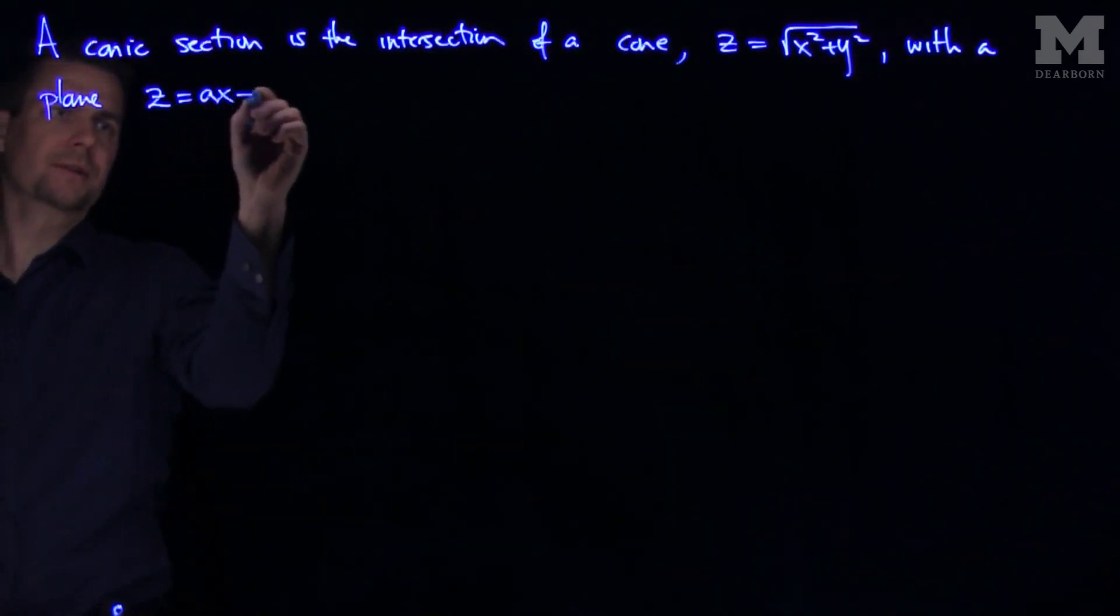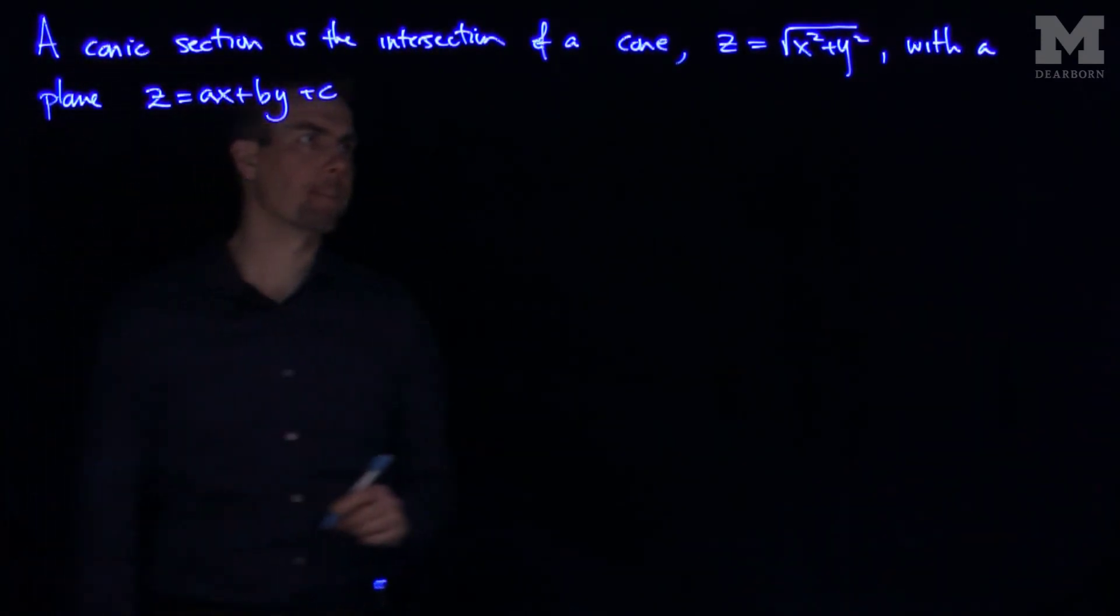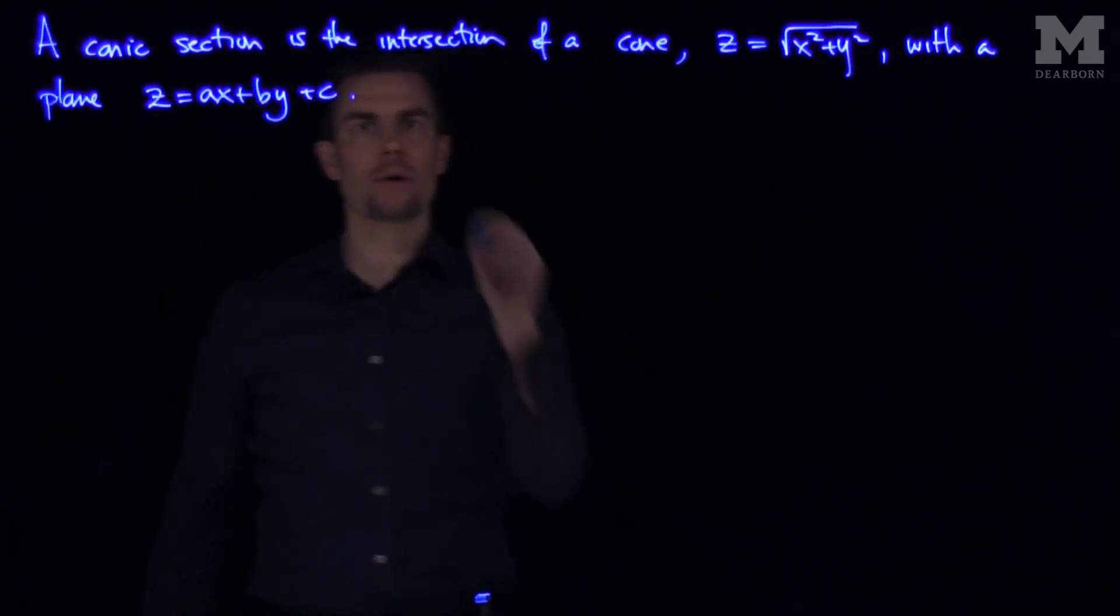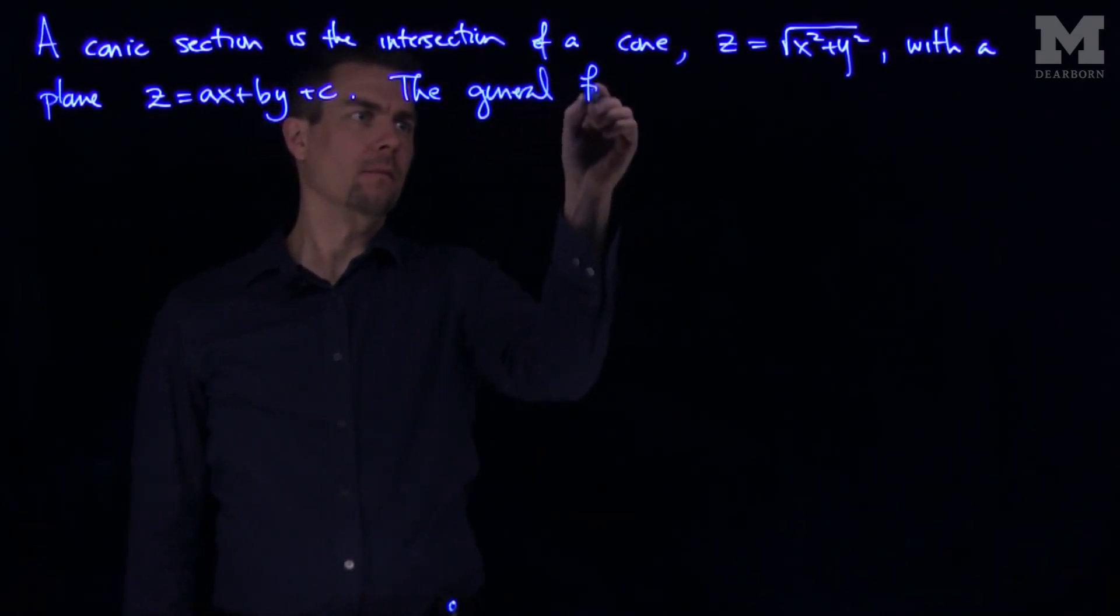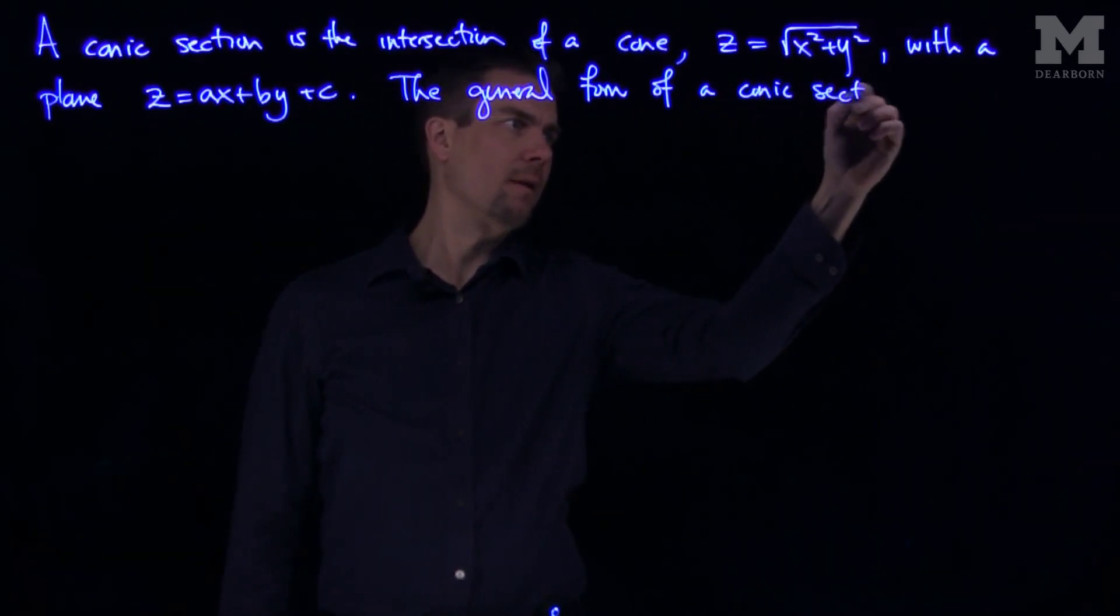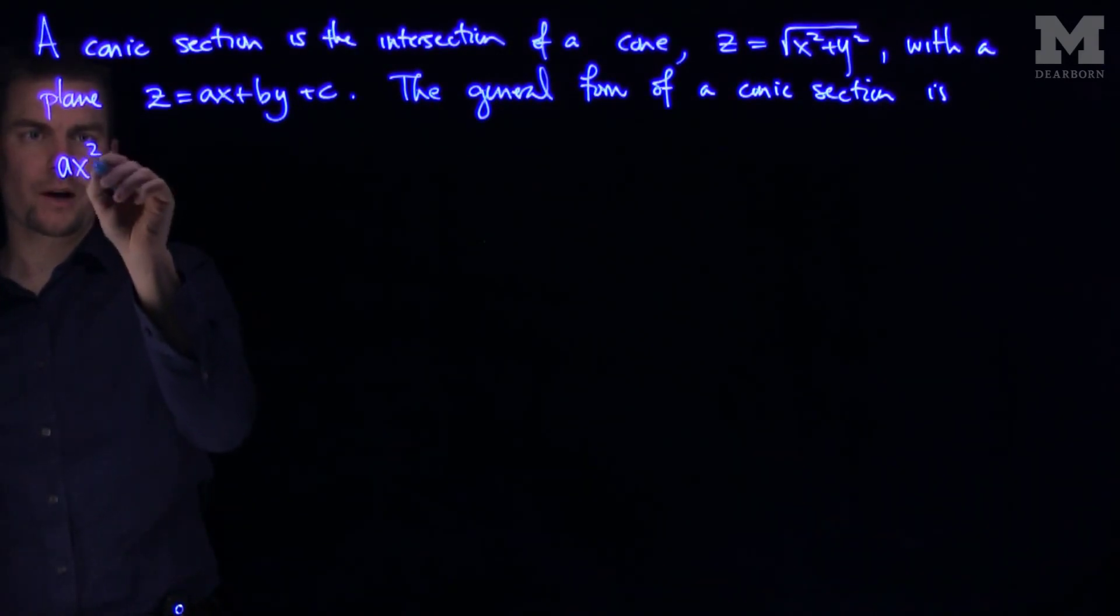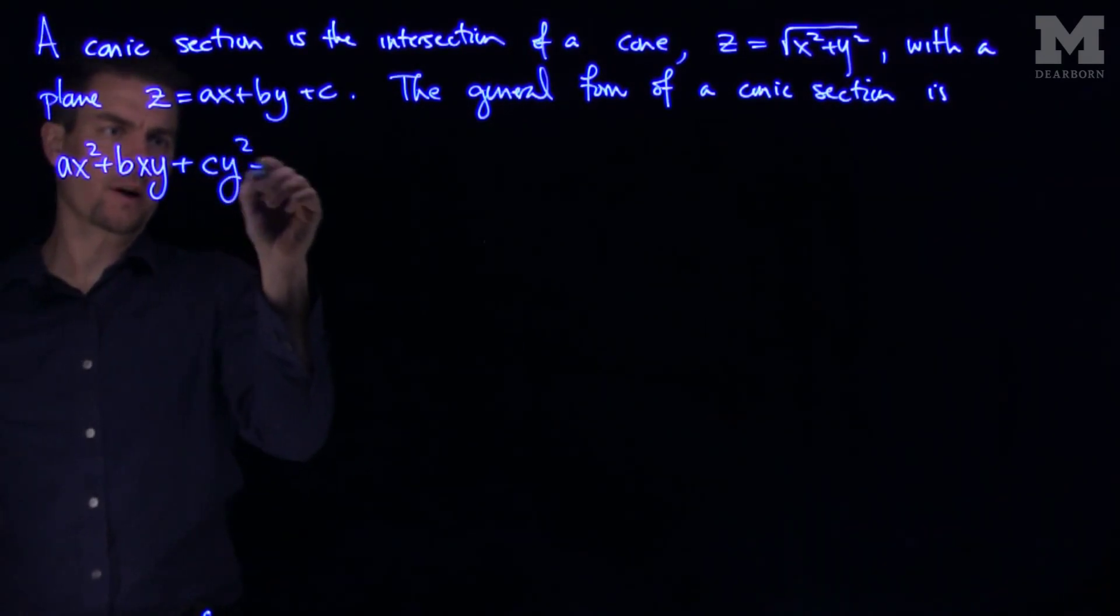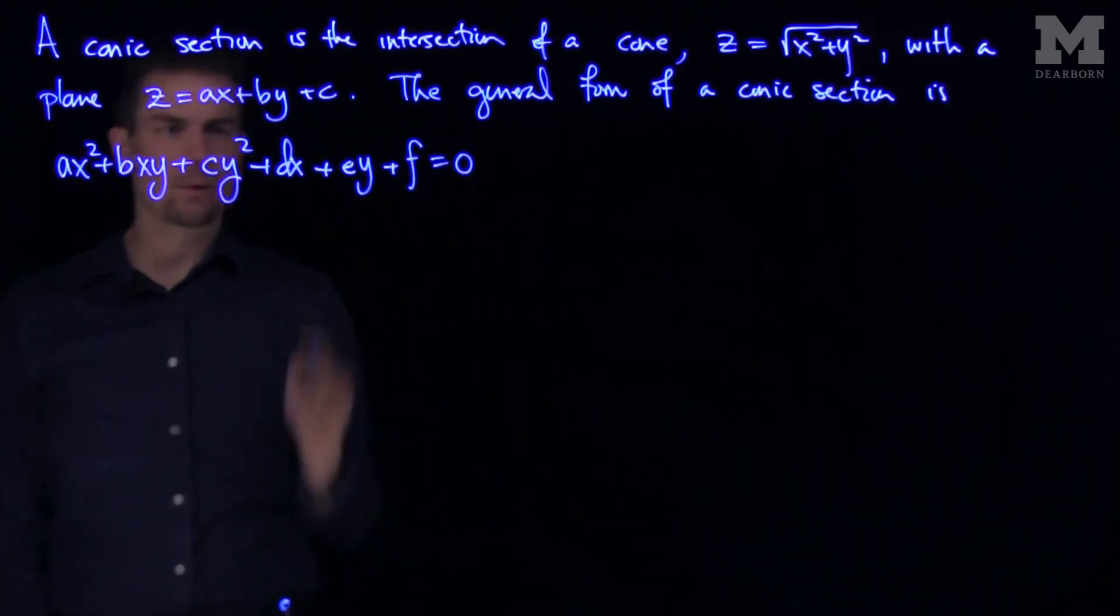z equals ax plus by plus c. If we set these equations equal, we see the general form of the conic section is some number ax squared plus bxy plus cy squared plus dx plus ey plus f equals zero.